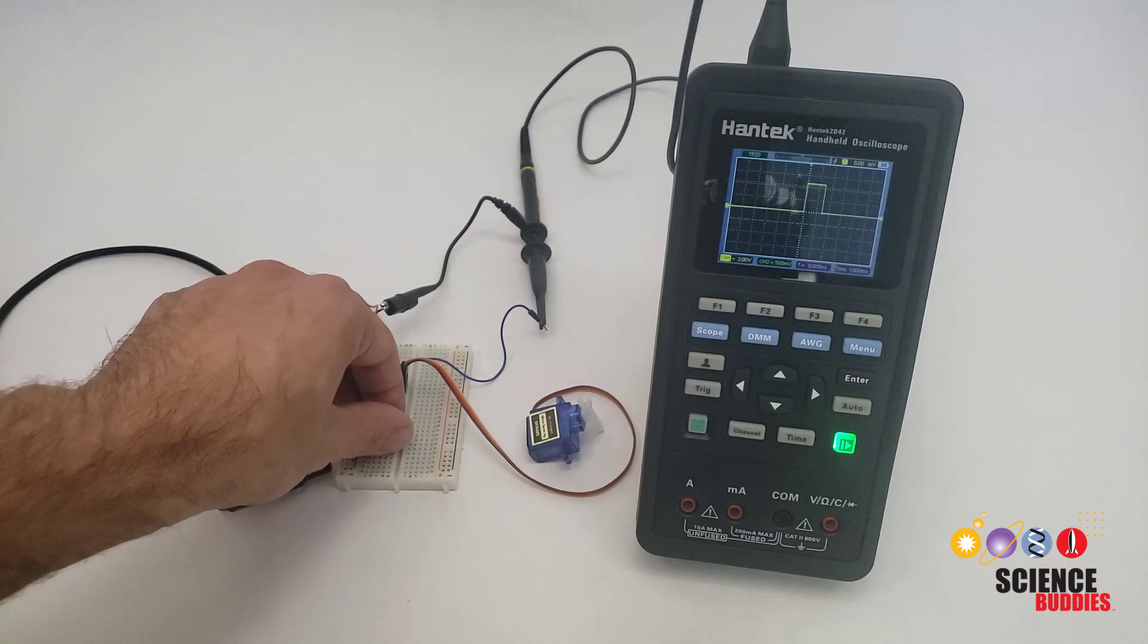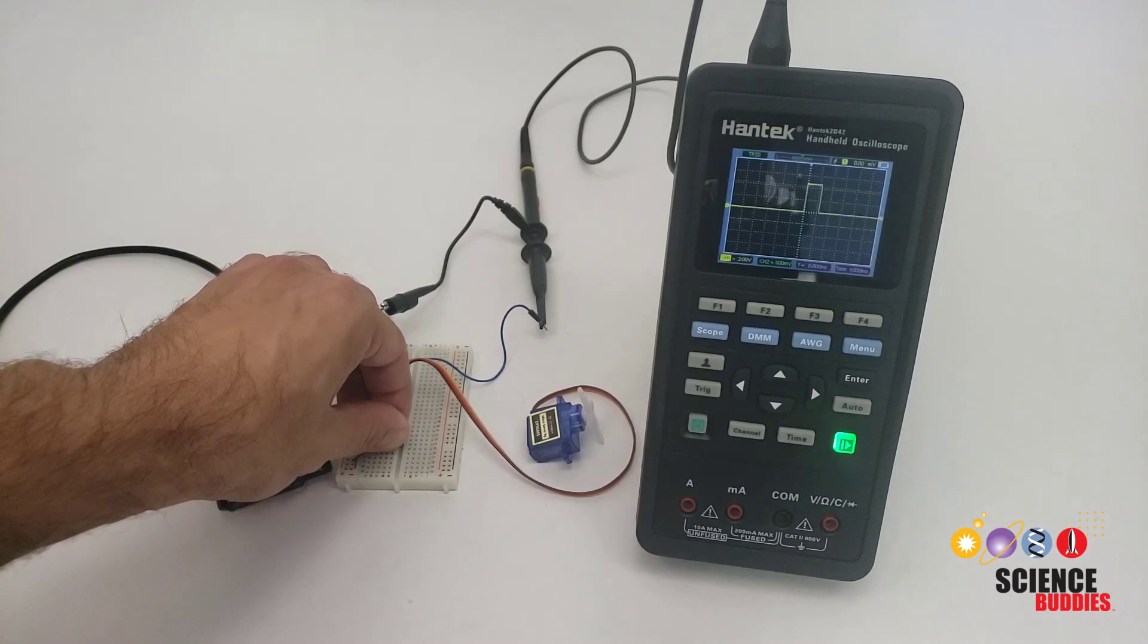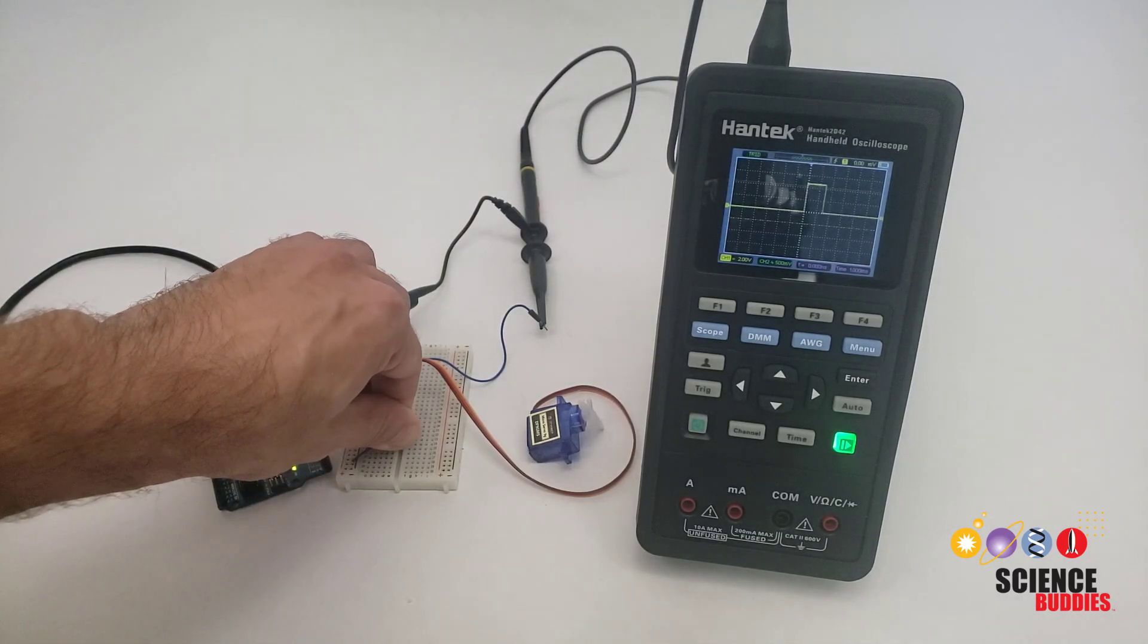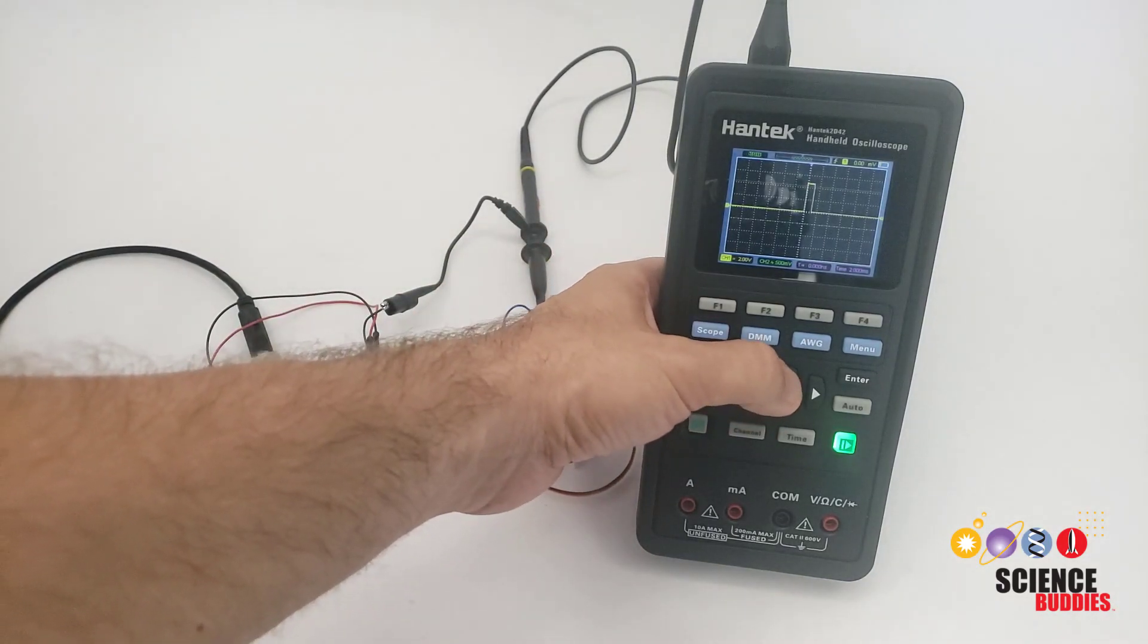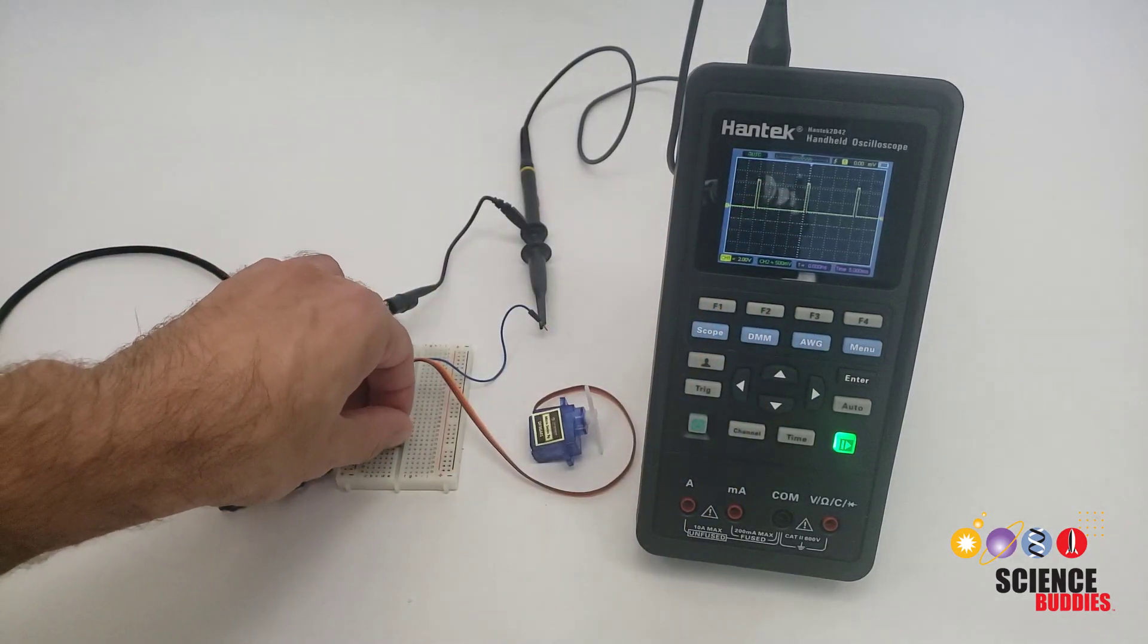So you can see as I turn the potentiometer here, the width of that pulse on the screen changes. And if I zoom out on my x or time axis here, we will see that this signal is actually a chain or a series of these pulses. And again, when I change the potentiometer position, I am changing the width of those pulses.